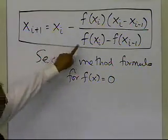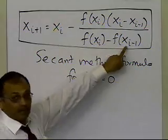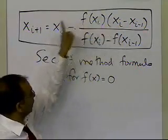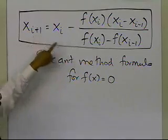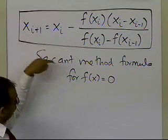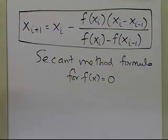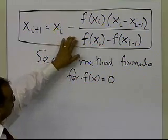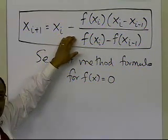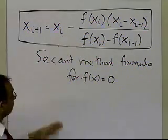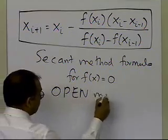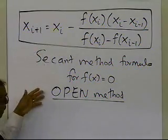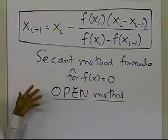You need two initial guesses — x_{i-1} and x_i — to compute the right-hand side and get x_{i+1}. Then you use x_i and x_{i+1} to get x_{i+2}, continuing until the root is found within a pre-specified tolerance. Although two initial guesses are required, this is still an open method — not a bracketing method — because the two guesses don't necessarily have to bracket the root, just like the Newton-Raphson method.